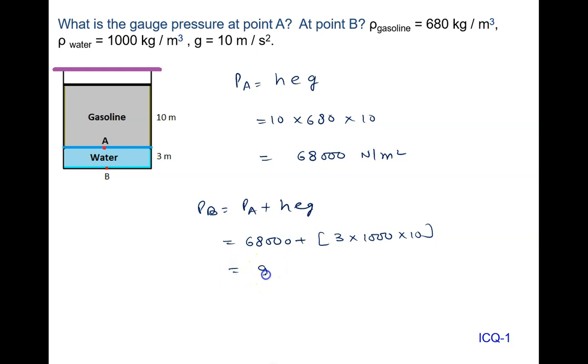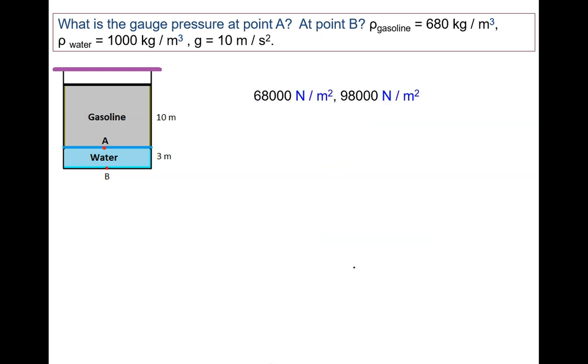So it is 98,000 newton per meter square. The answer to the problem is 68,000 newton per meter square at point A and 98,000 newton per meter square at point B.